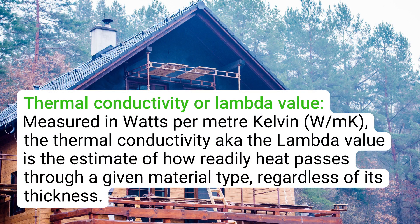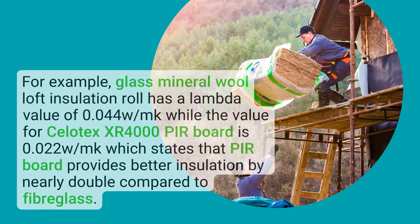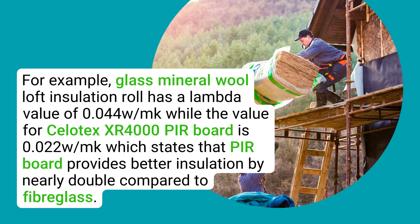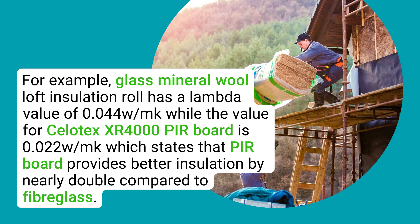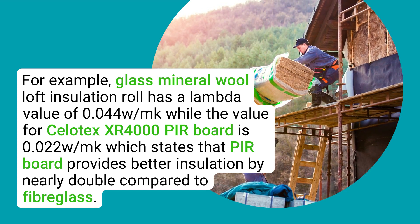Thermal conductivity, also known as the lambda value, is measured in watts per meter kelvin. It is the estimate of how readily heat passes through a given material type, regardless of its thickness. The lower the thermal conductivity, the greater its thermal performance, meaning heat will pass through the material slower from a warm space to a colder space. For example, glass mineral wool loft insulation roll has a lambda value of 0.044 W/mK, while the Sellatex XR 4000 PIR board is 0.022 W/mK, which means PIR board provides better insulation by nearly double compared to fiberglass.